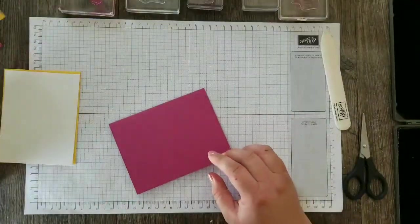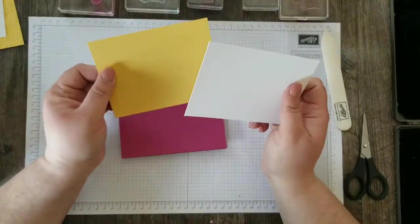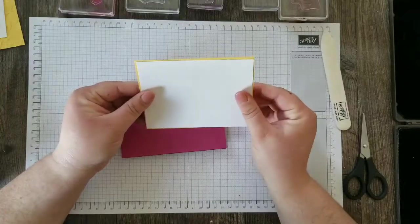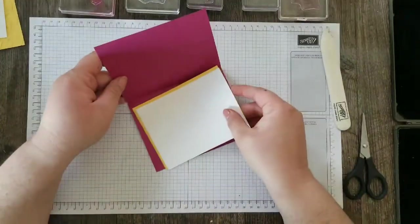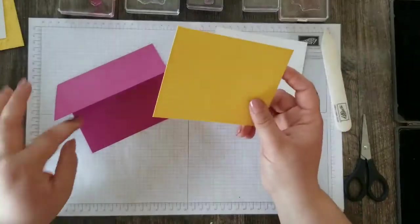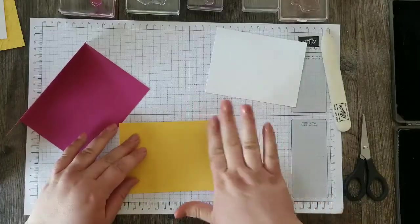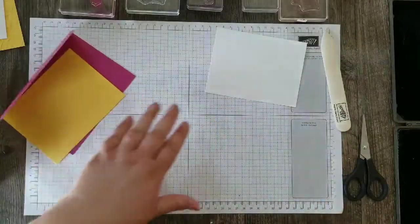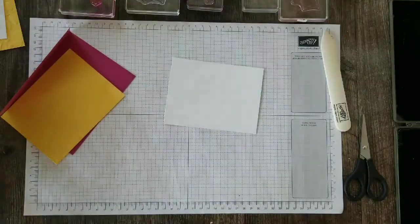For the inside of our card I've got a layer of Daffodil Delight and a layer of Whisper White, and I like to do this so that we have a nice crisp white sheet to write our message on. Our layer of Daffodil Delight is four inches by five and a quarter and our Whisper White is just one eighth of an inch smaller than that.